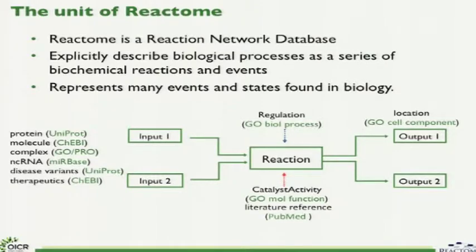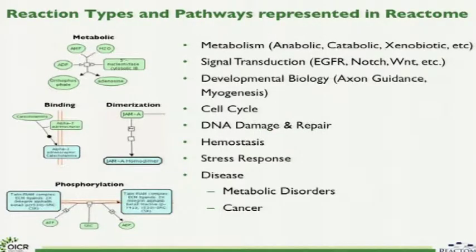We use reference databases to cite this information when we curate reactions and pathways, and we use Gene Ontology terms to describe regulatory events, molecular function, and where reactions are participating within the cell. We can describe many different types of reactions — things like metabolism, dimerization, and reactions associated with signaling such as phosphorylation. These reactions become building blocks to create causal chains of events that we describe as pathways. Reactome has a strong emphasis on signal transduction and captures some areas of metabolism.